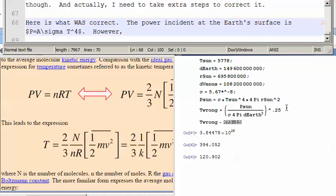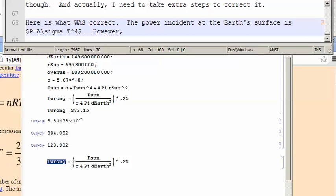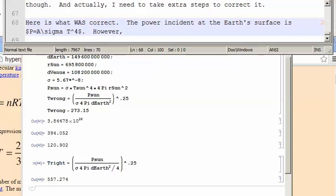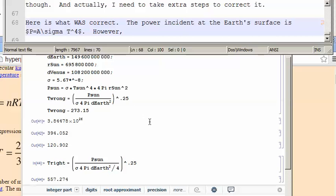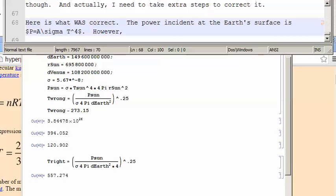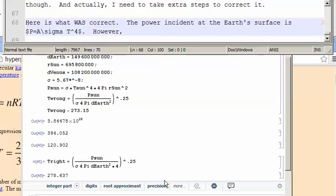So we can just repeat this calculation, except put a factor of four in there, the fourth root of power over four sigma a. And I think that should be correct. So I'll just come over here, copy this, change it to t right, and put in sigma four pi divided by four. Then we get 278.6 Kelvin.